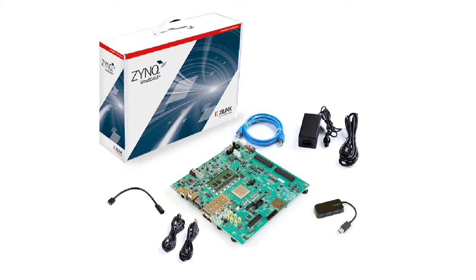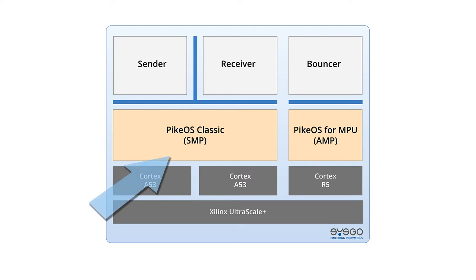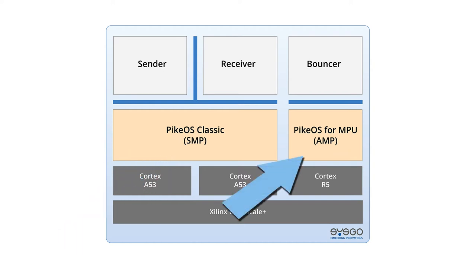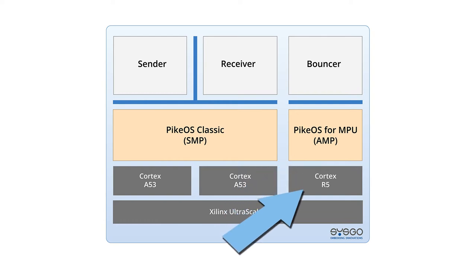and a real-time capable Arm Cortex-R5. PyQoS Classic is running on the A53 in SMP mode. PyQoS for MPU is running on the R5 in AMP mode.